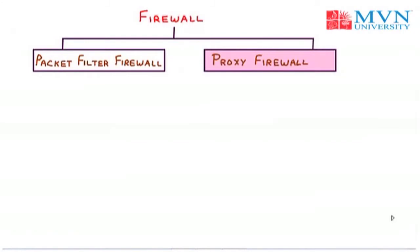Next we have the proxy firewall. The packet filter firewall is based on information available in the network layer and transport layer headers, but sometimes we need to filter a message based on the information available in the message itself. For example, assume that an organization wants to implement the following policies: first, only those internet users who have previously established business relations with the company can have access; second, access to other users must be blocked. In this case a packet filter firewall is not sufficient because it cannot distinguish between different packets arriving at TCP port 80 — this testing can be done at the application level with the help of URLs.